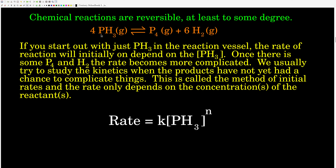To avoid this complication, we use the method of initial rates — we measure the rates at the very beginning of the reaction, when there's only reactant in the vessel. So for this reaction, the rate would be equal to the rate constant times the concentration of phosphine raised to N, which would also be the overall order for this reaction.